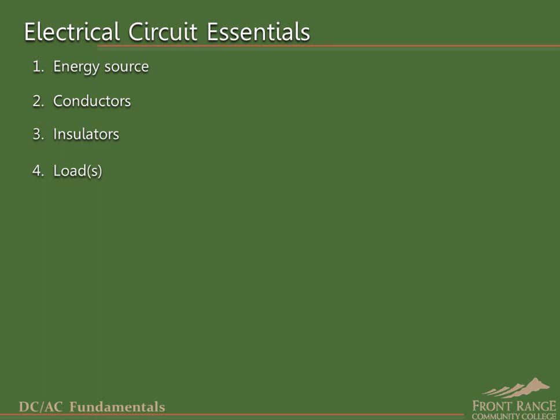In addition to these four essential elements, there are two additional elements that may be considered optional. The first is a control device, usually a switch, that allows us to interrupt the current and therefore turn the circuit off when we don't want it to be operating. Although it is difficult to imagine a useful electrical device without such a switch, it is not necessary for current to flow. Lastly, some form of protection device, such as a circuit breaker, prevents excess current from damaging other components of the circuit.